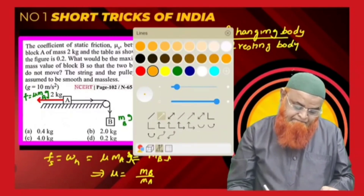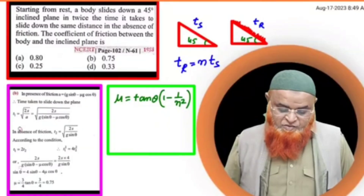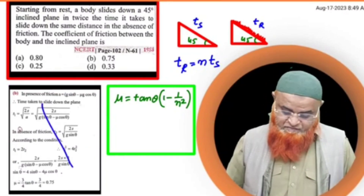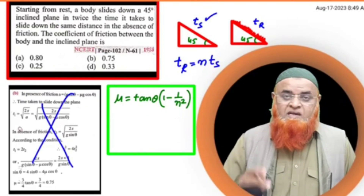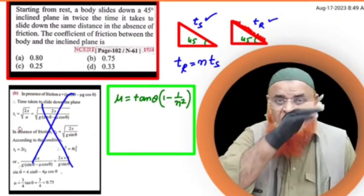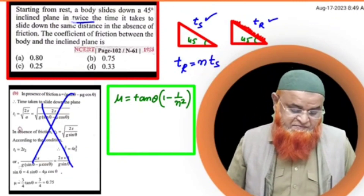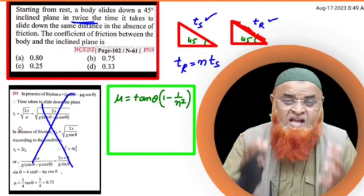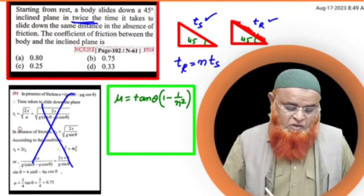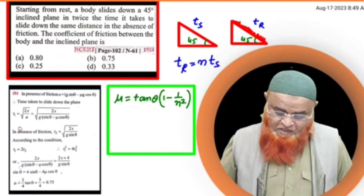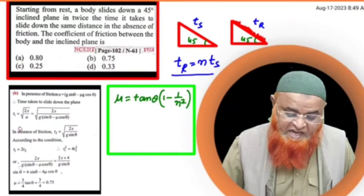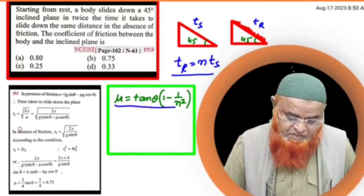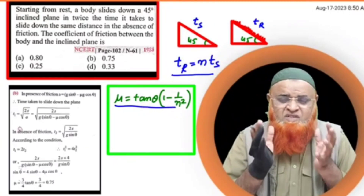Now look at the next problem. Time taken on the smooth surface is TS and time taken on the rough inclined plane is TR. The time on the rough surface is twice that on the smooth surface. There is a general formula: if the rough surface time is n times the smooth surface time, then mu equals tan theta multiplied by (1 minus 1/n²).